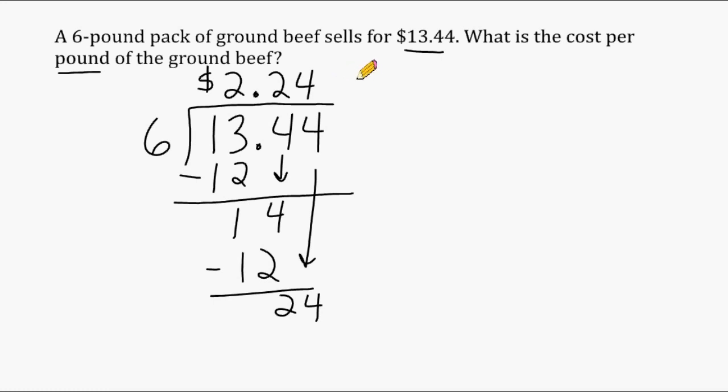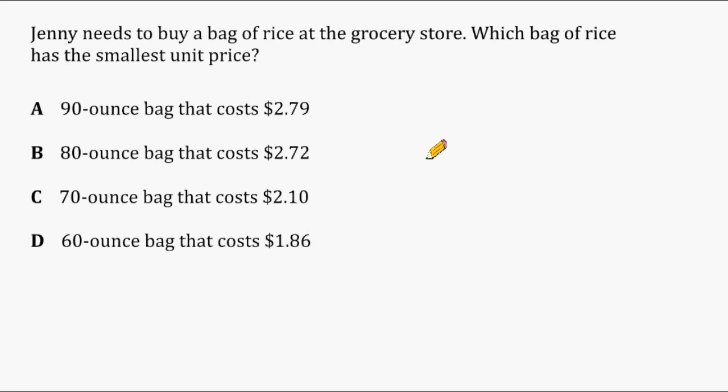Alright, let's go ahead and do another example involving unit price. This problem states that Jenny needs to buy a bag of rice at the grocery store. And we have to determine which bag of rice has the smallest unit price. So to solve this, we basically have to do four division problems. So let's start with choice A.